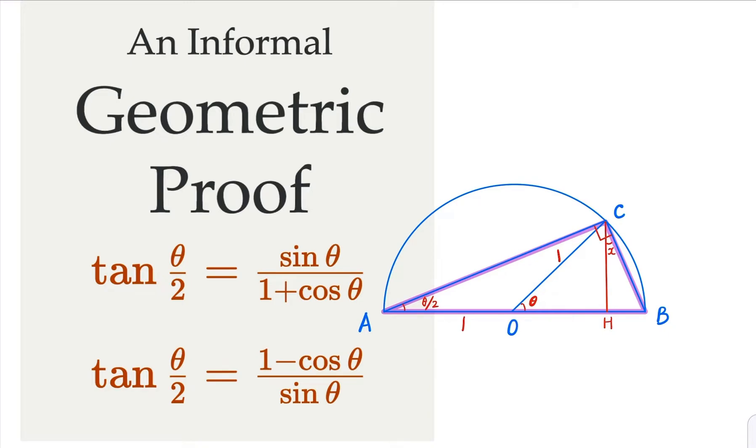We try to prove the half-angle tangent formula with a geometric construction. Here we use a unit circle. AB is a diameter going through the center O. So ACB is a right triangle here.